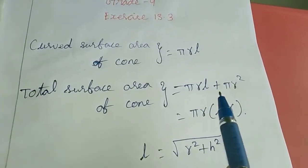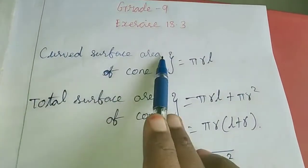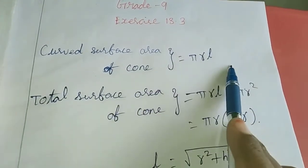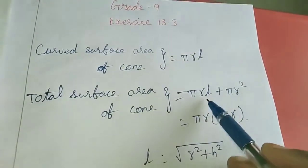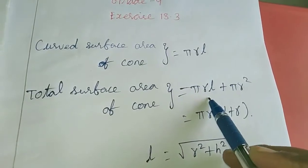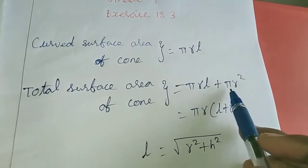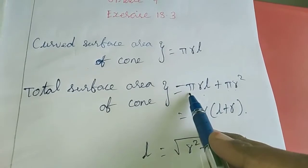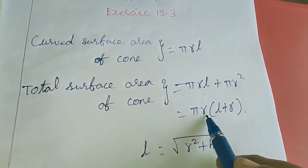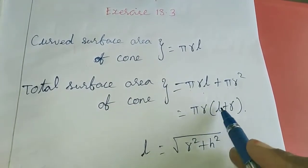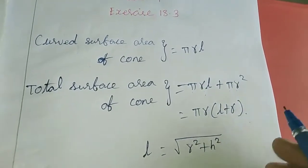In this exercise we are going to study about cone. Curved surface area of cone is pi r l. Total surface area of cone equals this curved surface area plus the base area, which is pi r square. So we have common pi and r, taking out pi r, the balance is l plus r. This is the total surface area formula.